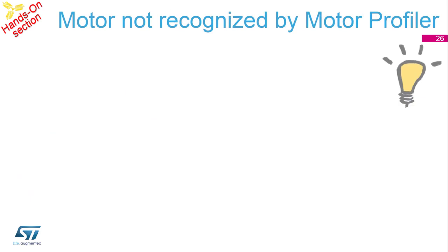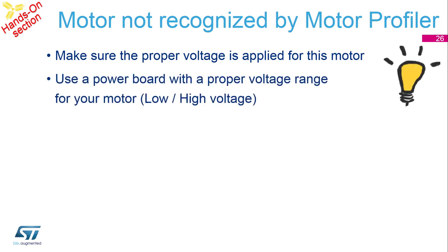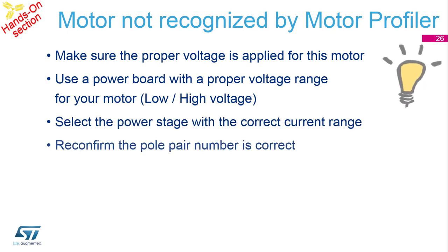There are occasions where the motor is not recognized by the motor profiler. An incorrect voltage can cause a problem — we just had a case where the wrong maximum speed was entered and the motor didn't characterize correctly. If you have the wrong voltage it may mean the motor exceeds what your power board can deliver, so you'd need to try a different add-on shield for your Nucleo. It could also be that you miscalculated the pole pairs. There are three parameters you give it: voltage, pole pairs, and maximum speed.